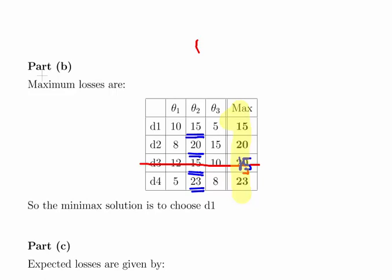We discounted d3. So essentially the answer is the minimum of those maximums or maxima is 15. So according to the minimax solution the best strategy is to pick d1. So no matter how bad it gets it'll never be worse than 15.